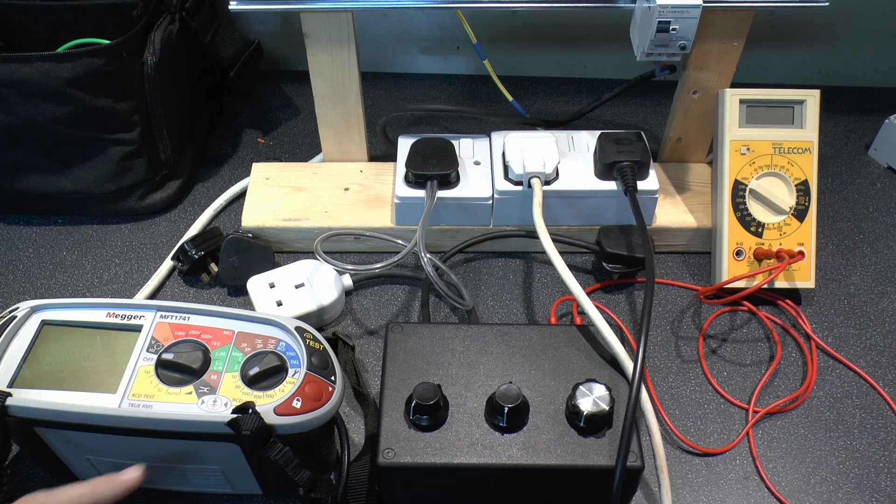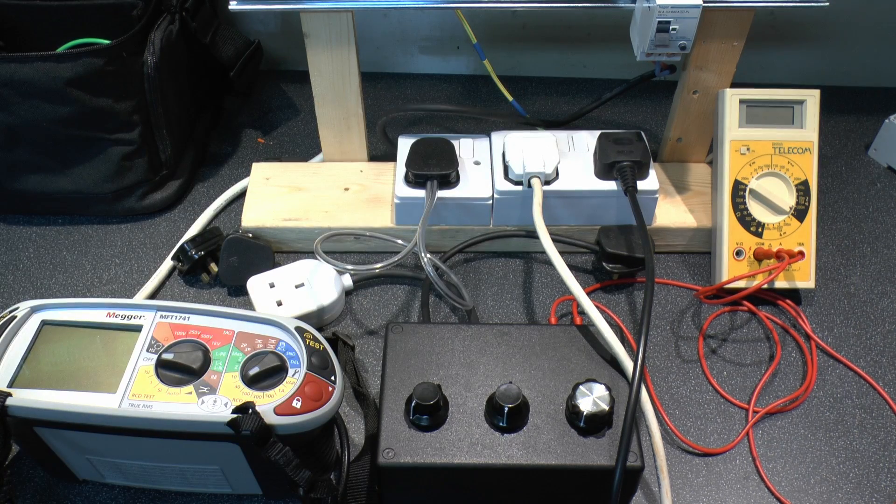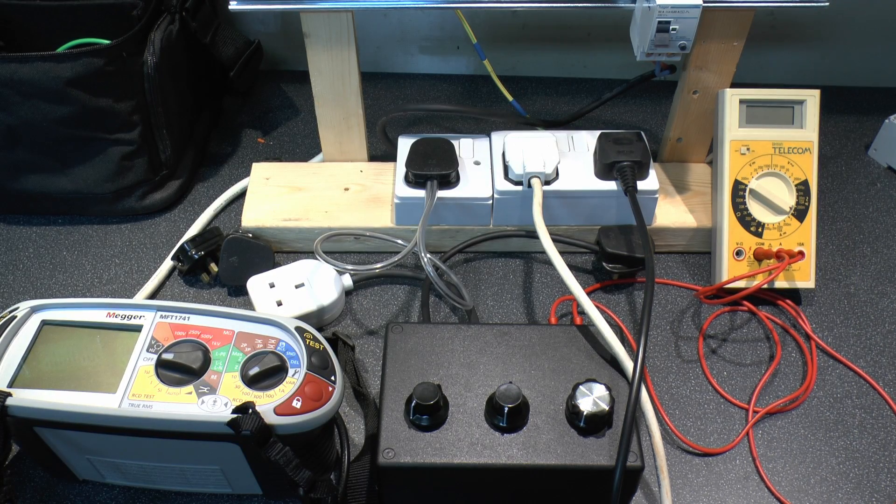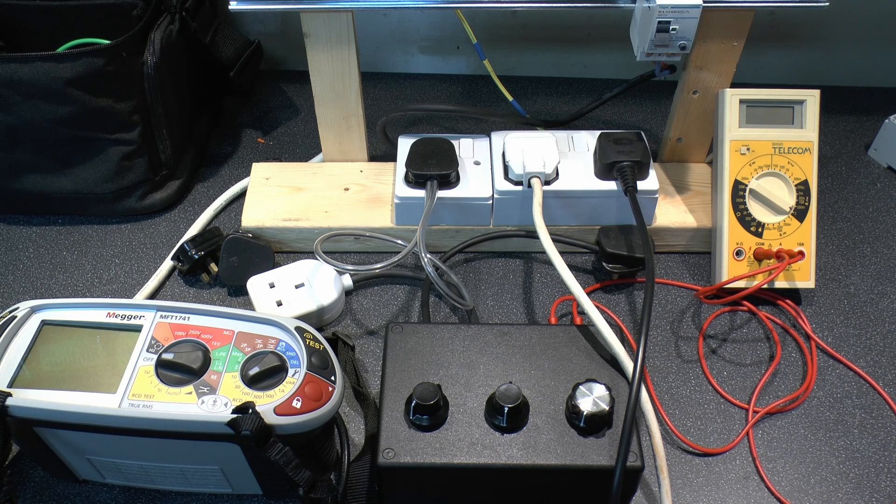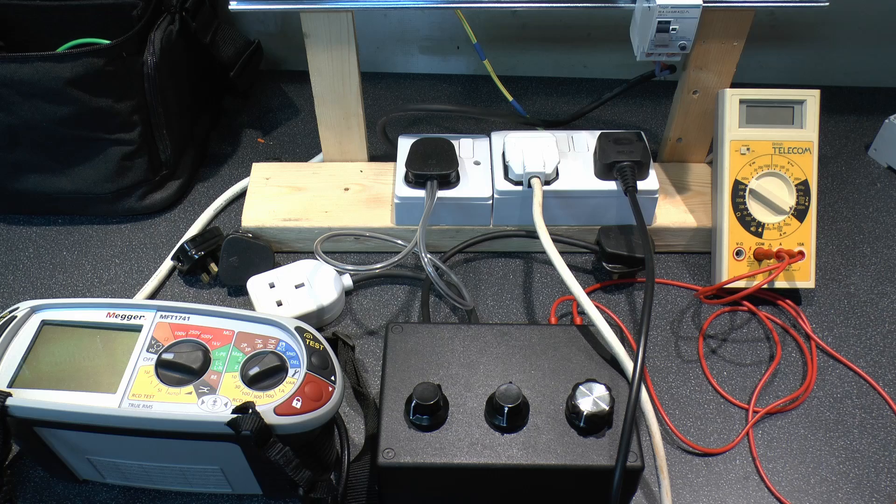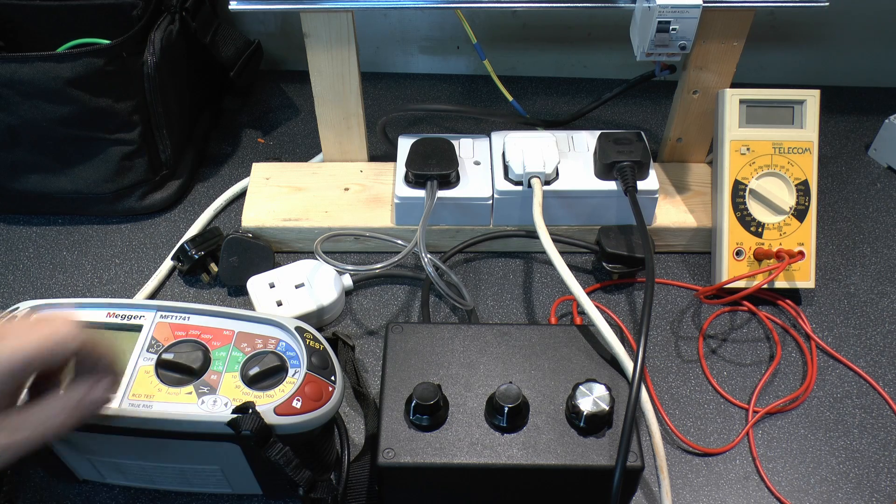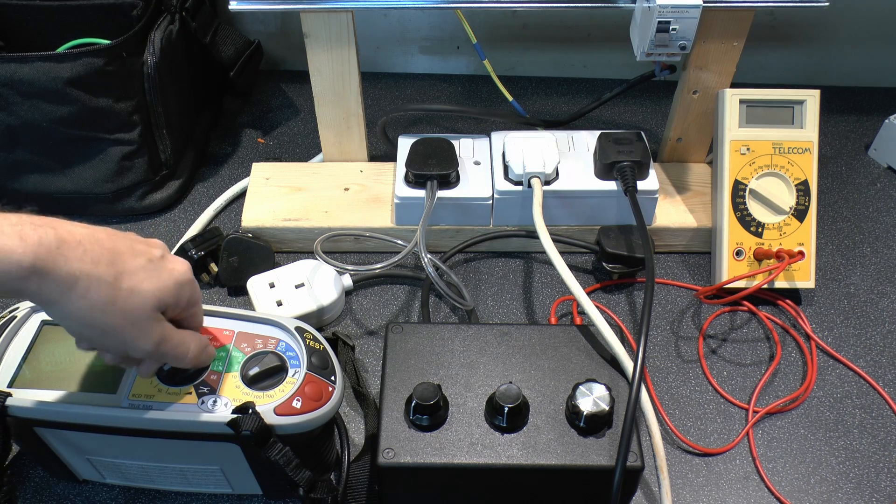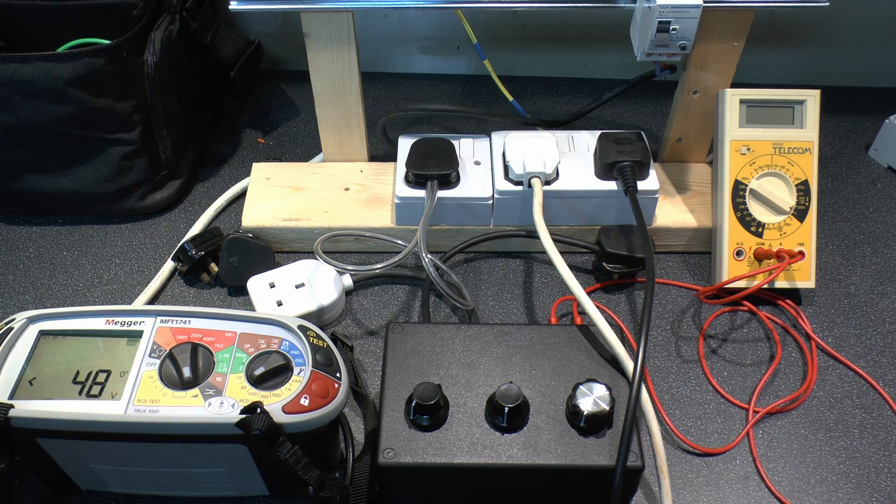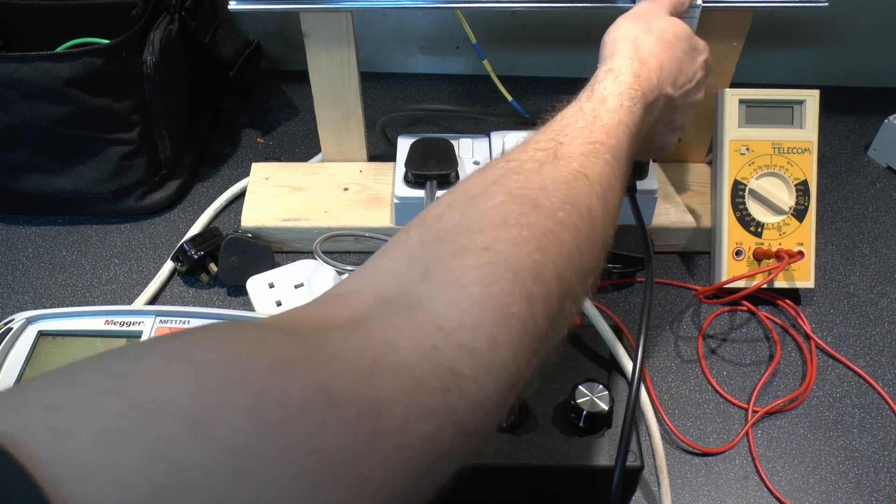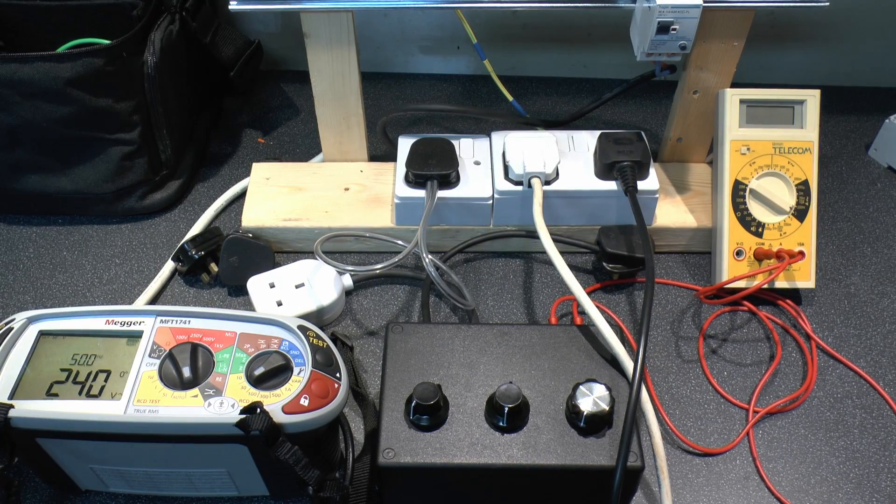Now to start with what we're going to do is just do a ramp test on this which will determine the current at which that actually trips. Now this is a 30mA RCD so it should trip somewhere greater than 15mA but obviously not greater than 30, so in that sort of range. So if we turn this on to the ramp testing position here and just put the power on as well, and we can turn on the RCD over there like that.